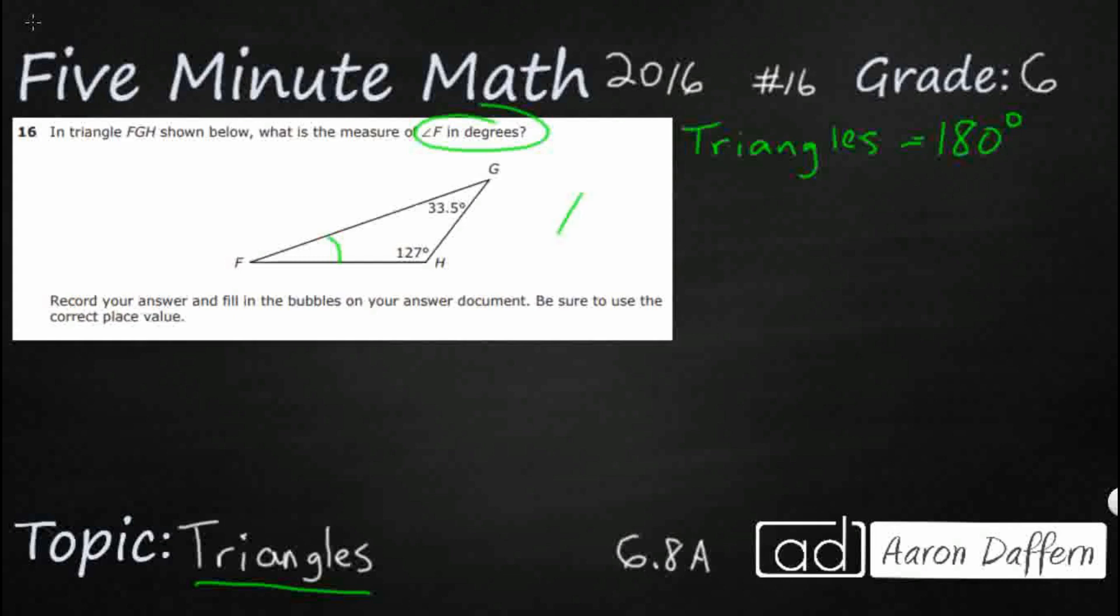It doesn't matter what kind of triangle you draw, whether it's the one that the problem gives you, whether it's more of an equilateral, whether it's an isosceles, it doesn't really matter. Guess what? Every triangle has a sum of 180 degrees on the inside.